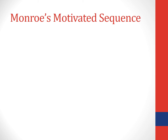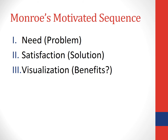Establishing that need is so important that it is one of three required main points. For Monroe's Motivated Sequence, the main points are need, satisfaction, and visualization. Each main point is like a miniature speech — a miniature persuasive argument. The first main point argues that there is a need or problem. The second main point proposes a good solution to satisfy that need. The third main point helps your audience visualize the benefits of that solution.